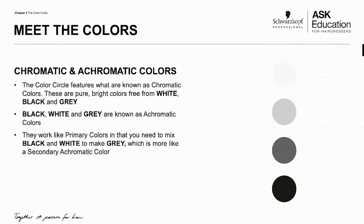Remember when we were talking about chromatic colors, we had the three primary colors, which were red, yellow, and blue. Well, in achromatic colors, there are only two primary colors: black and white.